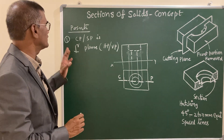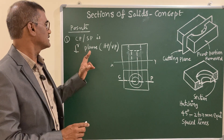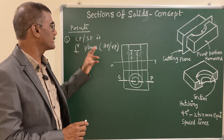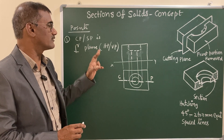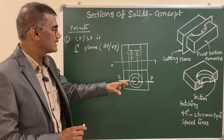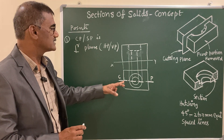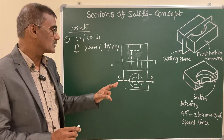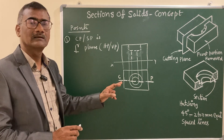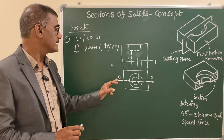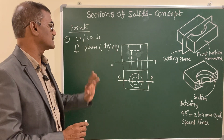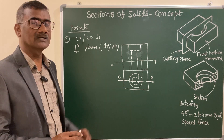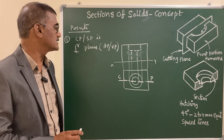So, the first point: the cutting plane is a perpendicular plane, perpendicular to HP or VP. The notation is an axis line with thick ends, and above that you write 'CP' which stands for cutting plane.